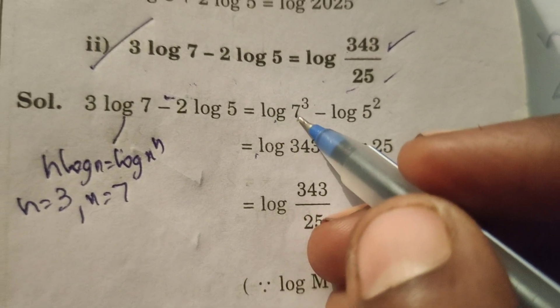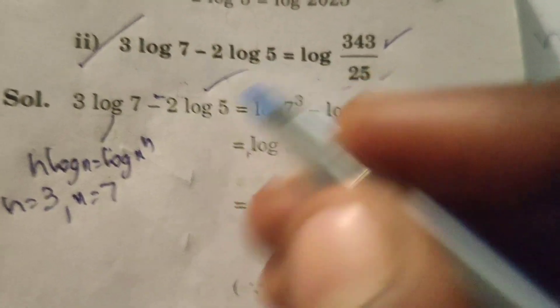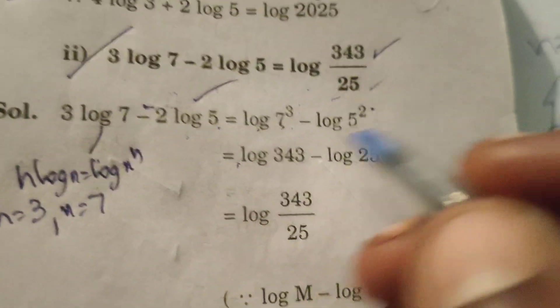Log x power n, log 7 power 3, minus here also using the same formula log 5 square.